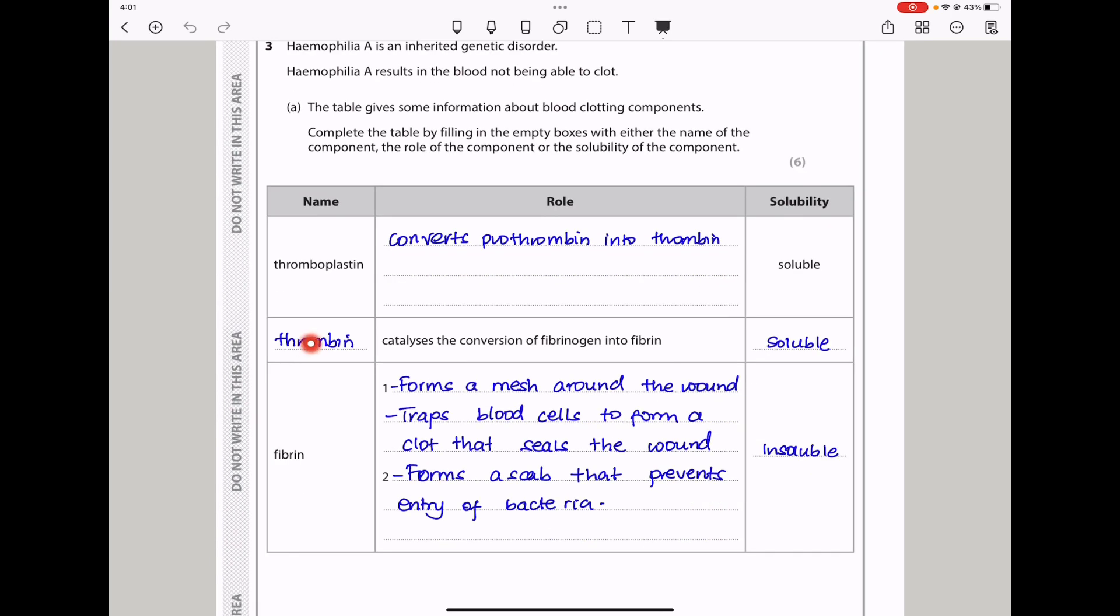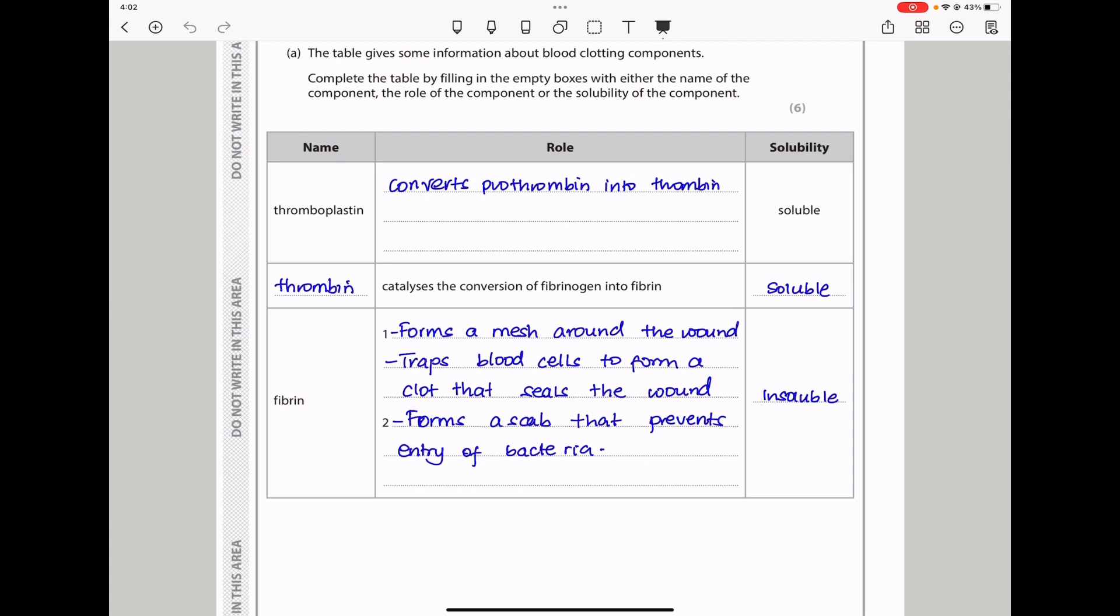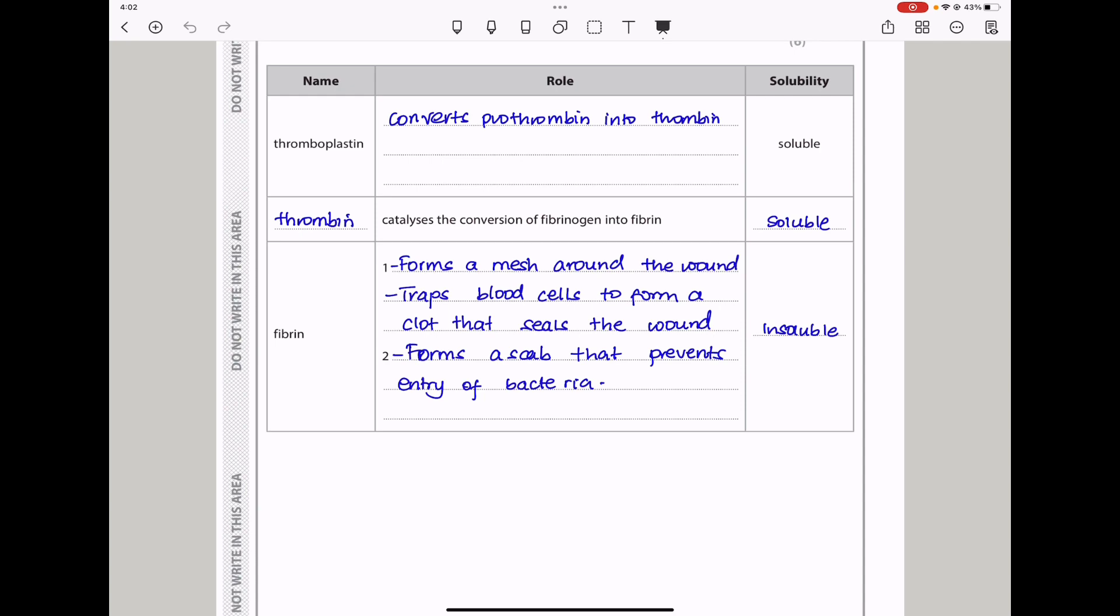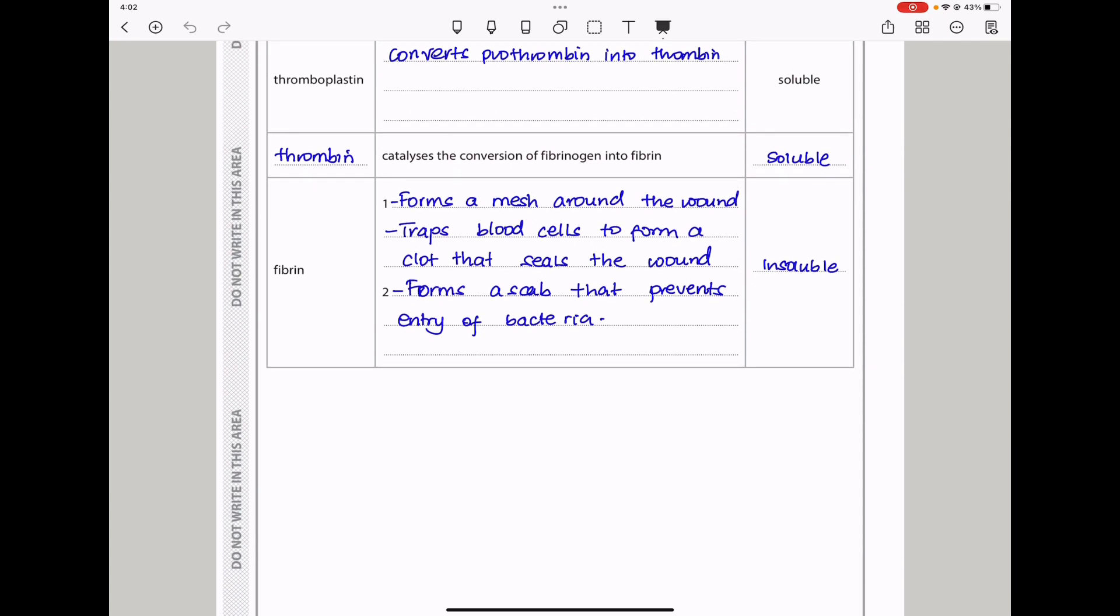Thrombin is also soluble, and it catalyzes the conversion of fibrinogen into fibrin. Fibrin is insoluble, and it forms a mesh around the wound. It also traps blood cells to form a clot that seals the wound. And then it forms a scab that prevents entry of bacteria as well as other pathogens.